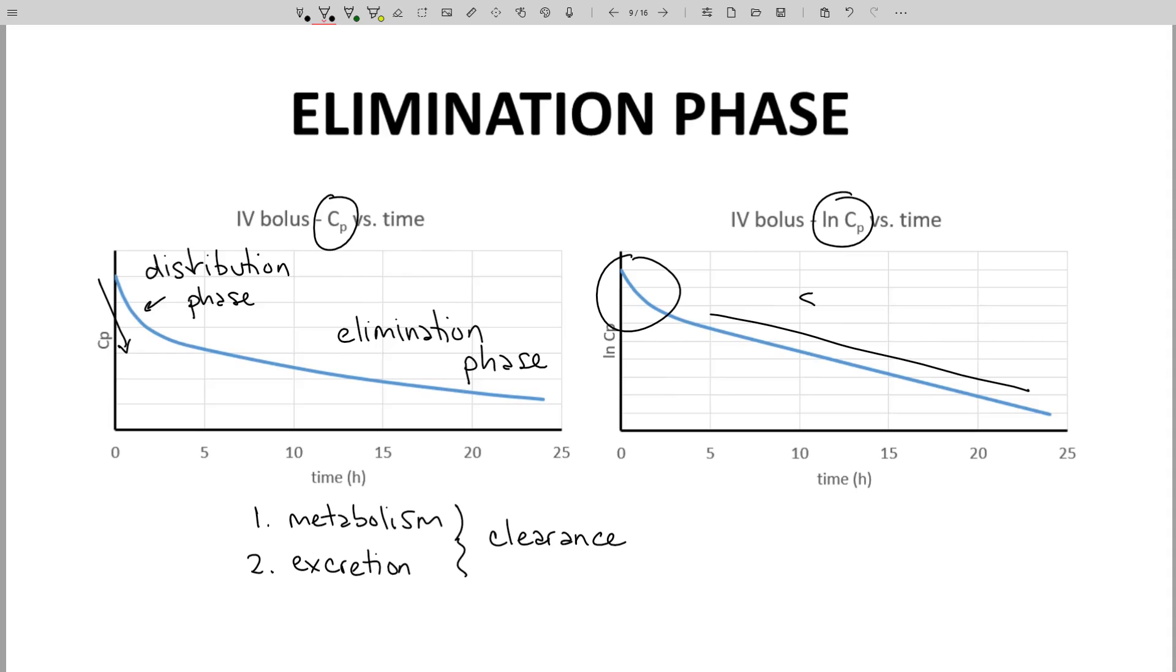The slope of the line is equal to the negative of something called the elimination rate constant, or KEL, which is closely related to a molecule's half-life.